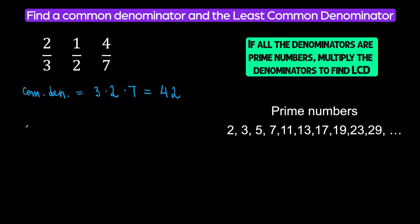Next, find the least common denominator. Let's look at our denominators — we have three, two, and seven. Our denominators are prime numbers. What are prime numbers? Prime numbers are two, three, five, seven, eleven, and so forth.